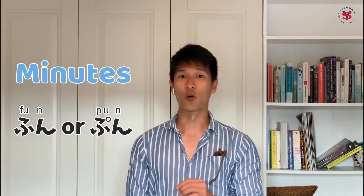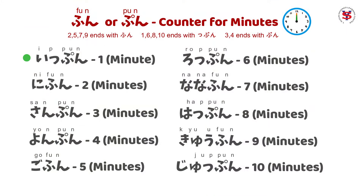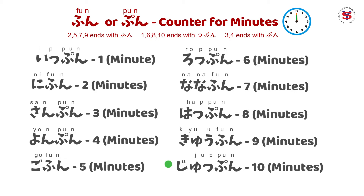For minutes naman, ang gamitin natin is fun or pun. So for example: one minute is ippun, two minutes is ni-fun, three minutes is san-pun. Let's go through one to ten: ippun, ni-fun, san-pun, yon-fun, go-fun, roku-fun, nana-fun, happun, kyuu-fun, juppun.